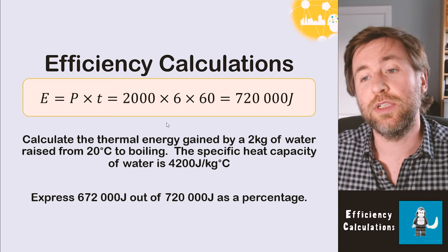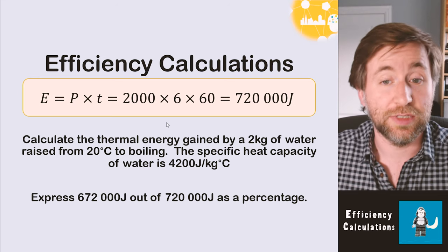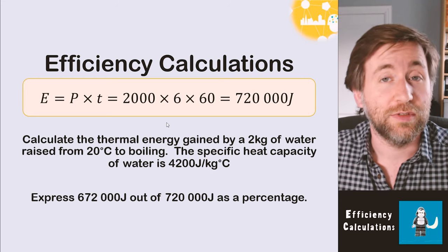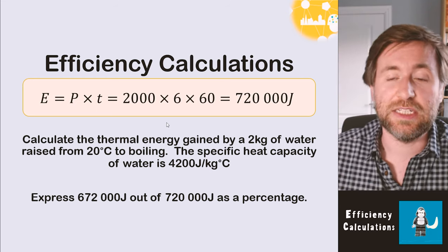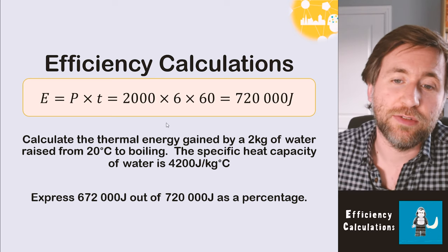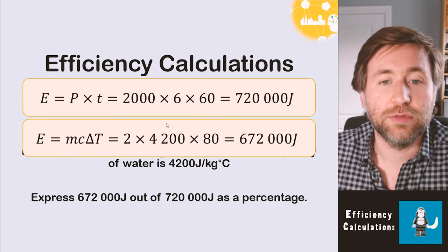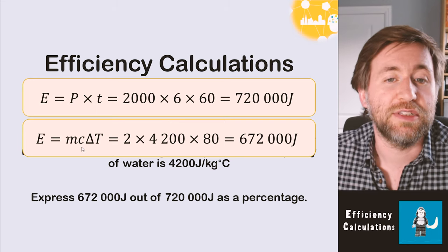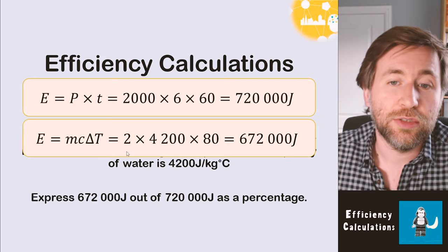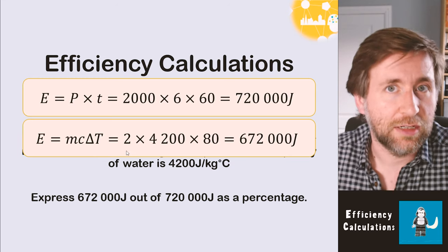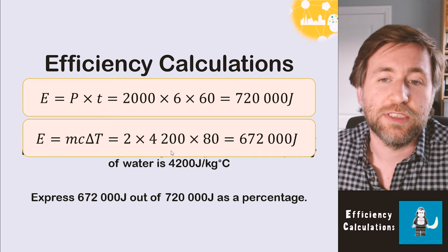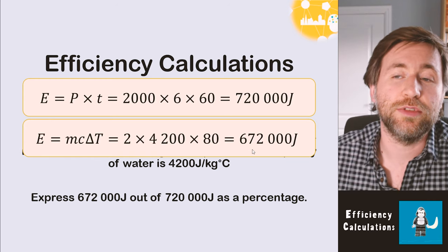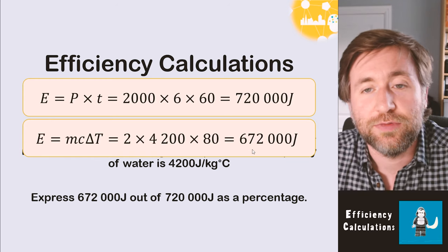Calculate the thermal energy gained by two kilograms of water raised from 20 degrees Celsius to boiling. The boiling point of water is 100 degrees Celsius, so the temperature change is 80. The specific heat capacity of water is 4,200 joules per kilogram per degree Celsius. Energy equals mass times specific heat capacity times temperature change: 2 × 4,200 × 80 = 672,000 joules transferred to the water.